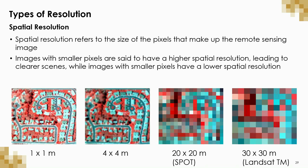Resolution in remote sensing refers to the quality and usability of the data that is collected. The first type of resolution is spatial resolution, which refers to the size of the pixels that make up the image. Images with smaller pixels allow the user to view areas in greater detail and are said to have a higher resolution. Images with larger pixels do not allow as great a level of detail and would be used to identify general trends over a large area. These images are said to have low spatial resolution, as illustrated in the figures at the bottom.